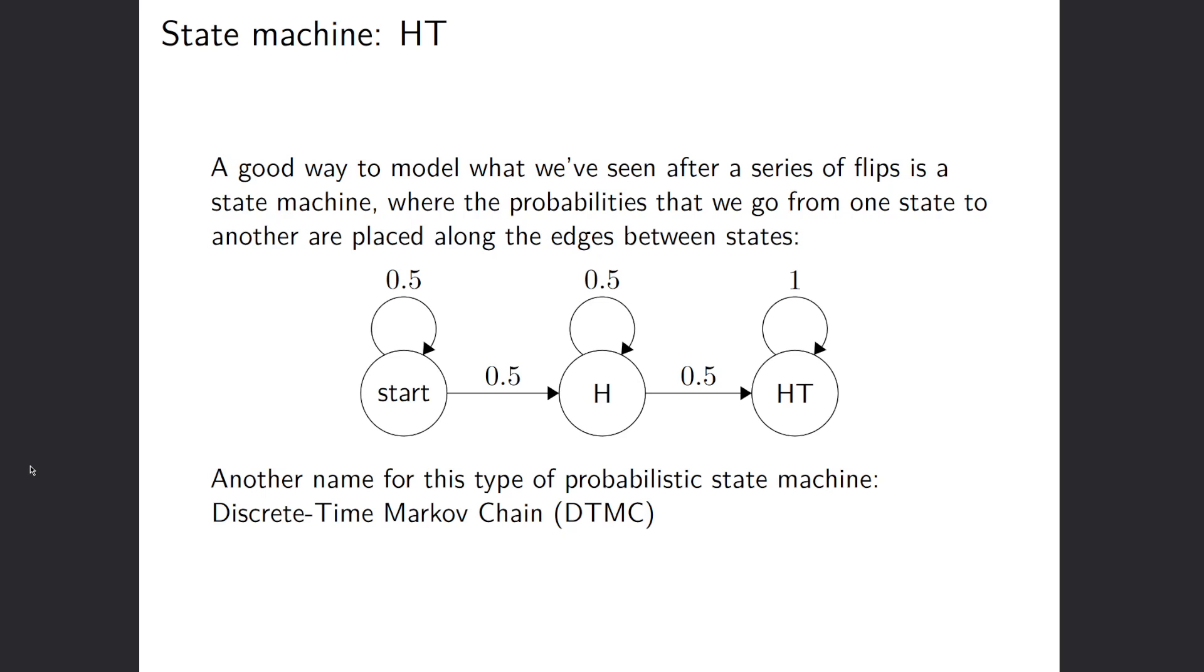So a good way to model this kind of problem is using a state machine, where the states are basically what we've seen so far with regard to the sequence that we want to see. So say we're at the start state, we haven't flipped anything yet. If you flip tails, we haven't made any progress towards our goal, so we just stay in the start state. If you flip heads, then we go to the H state. So we've seen a heads, that's part of our goal.